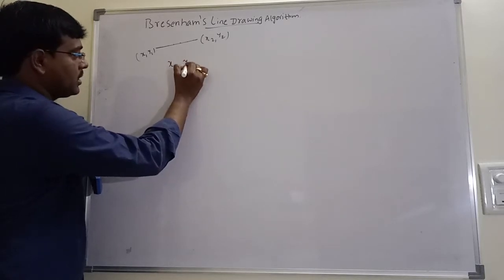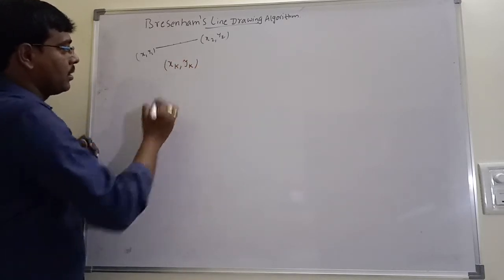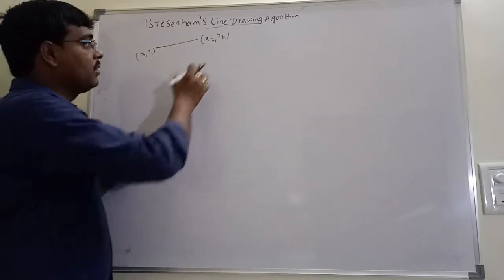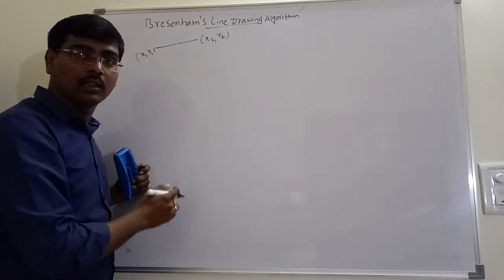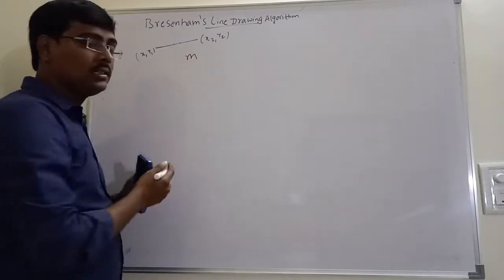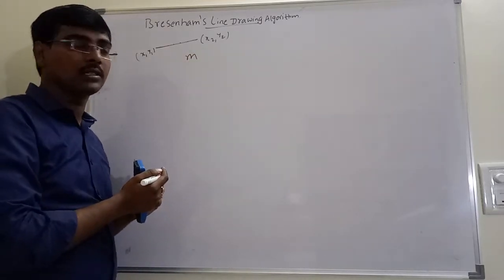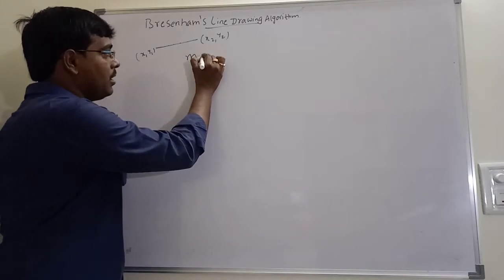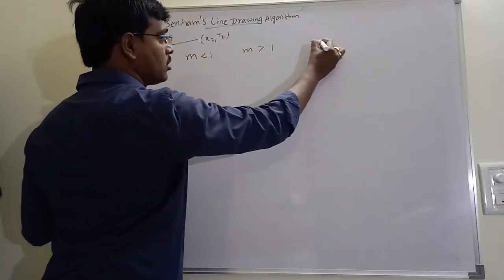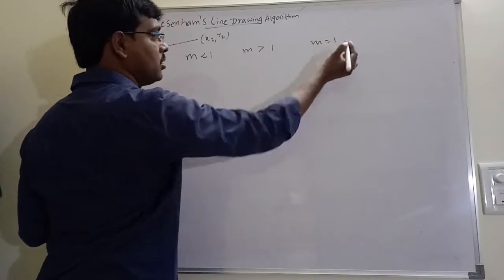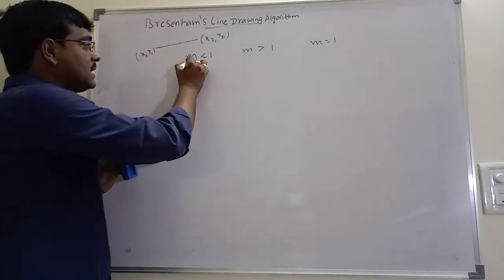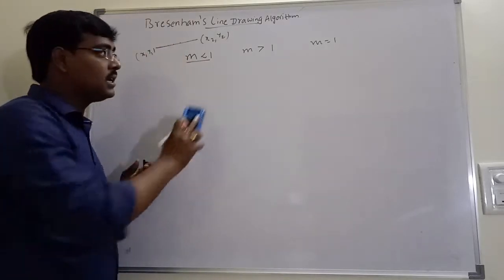For example, if the first point is xk, yk. Before going further, for each line drawing algorithm, we are calculating the slope. Slope has three possible cases: either the slope value is less than 1, slope value is greater than 1, or slope value is equal to 1. In our case, first consider slope value is less than 1.